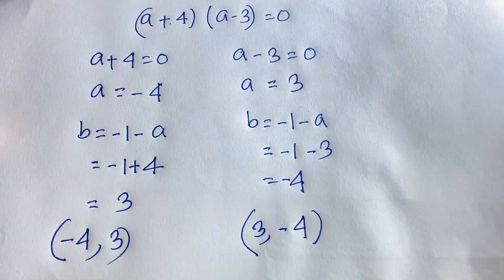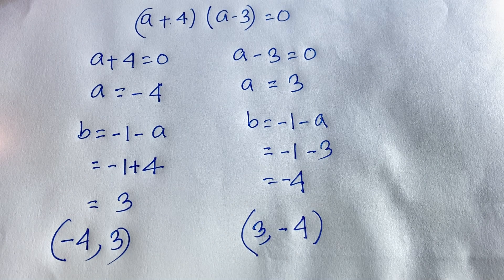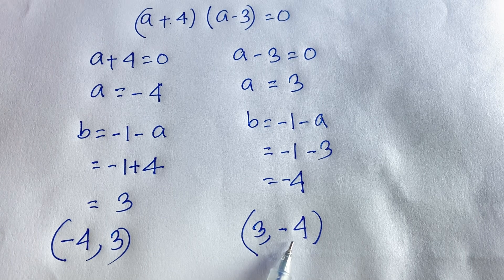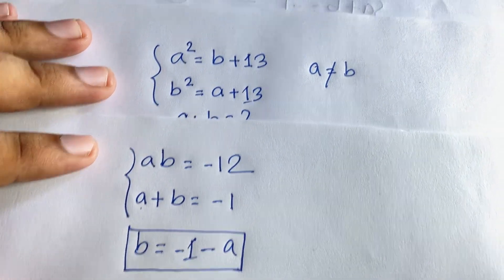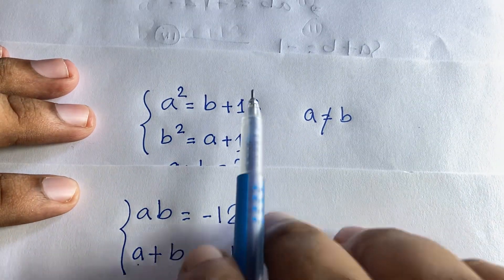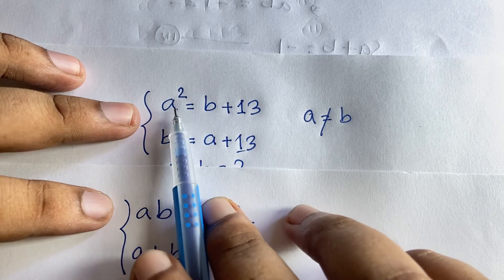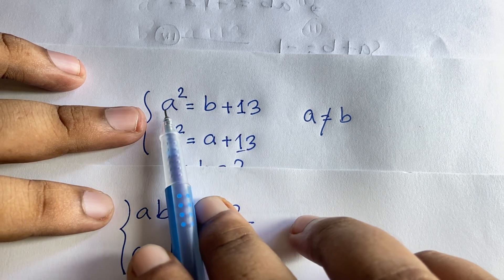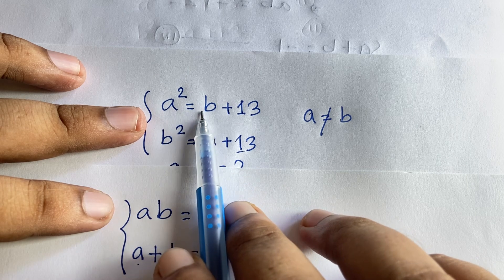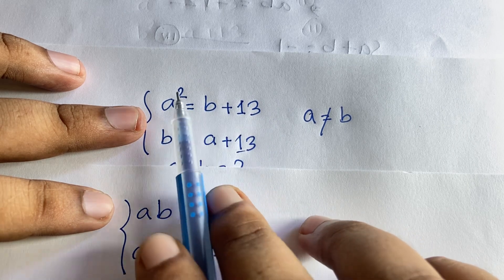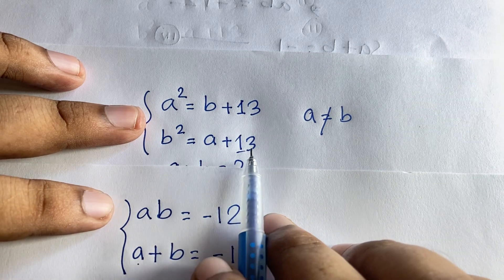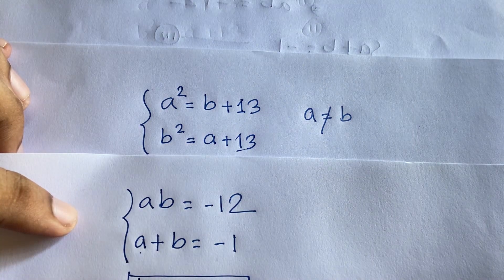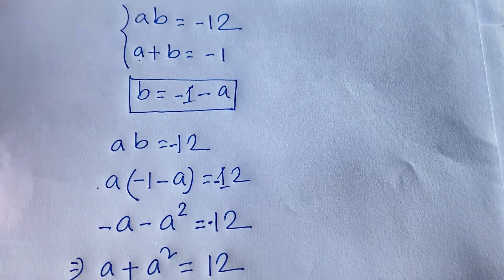Our final answer is: a equals negative 4 and b equals 3, or a equals 3 and b equals negative 4. We can verify: if a equals negative 4, then a squared equals 16, and b plus 13 equals 3 plus 13 equals 16. If a equals 3, then a squared equals 9, and b plus 13 equals negative 4 plus 13 equals 9. Both solutions check out. Thank you — if you enjoyed this video please subscribe for more interesting videos.